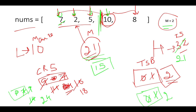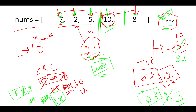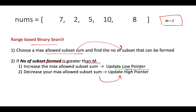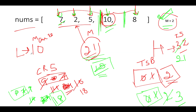Continuing with max=15: 10+8=18 again exceeds 15, so we must create another new subset, making the total subset count 3. Since 3 is greater than m=2, fifteen cannot be the answer. Therefore we increment the low pointer to mid+1 = 16. Now low=16, high=21.